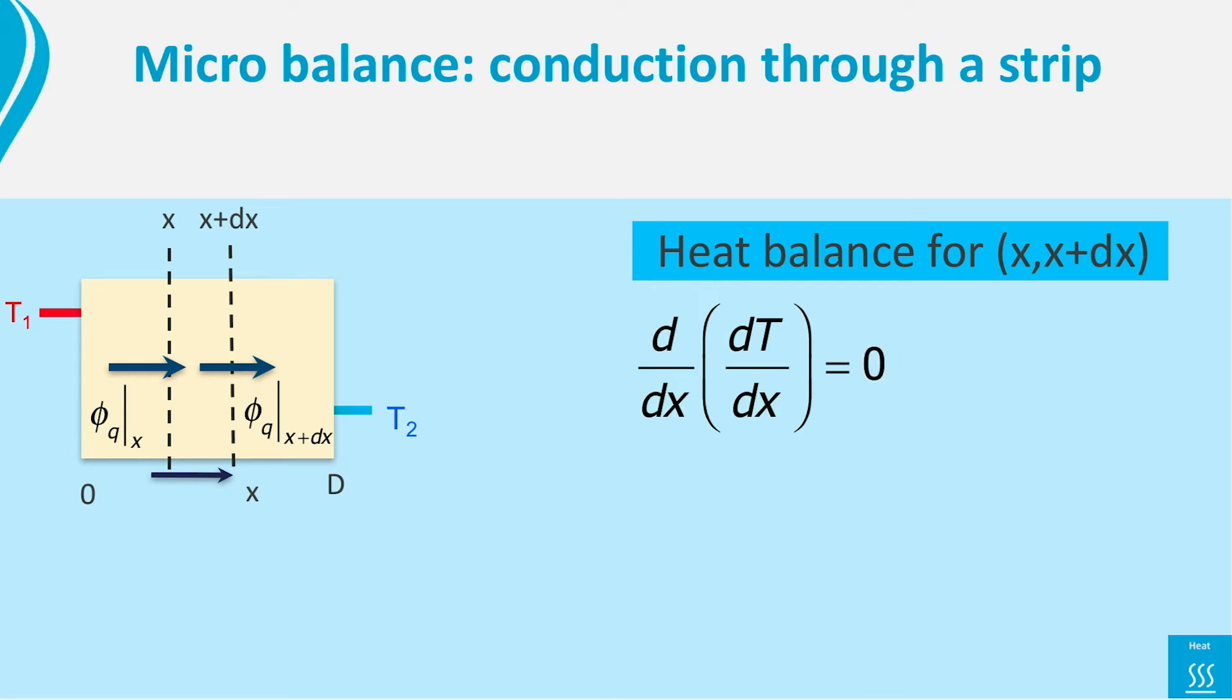This equation looks complicated, but actually it is rather straightforward to solve. First, we realize that if the derivative of a function equals 0, that function is a constant. Our function itself is a derivative, but that doesn't change the argument.